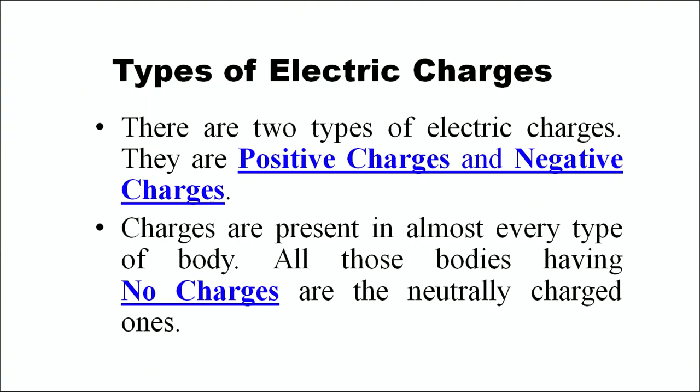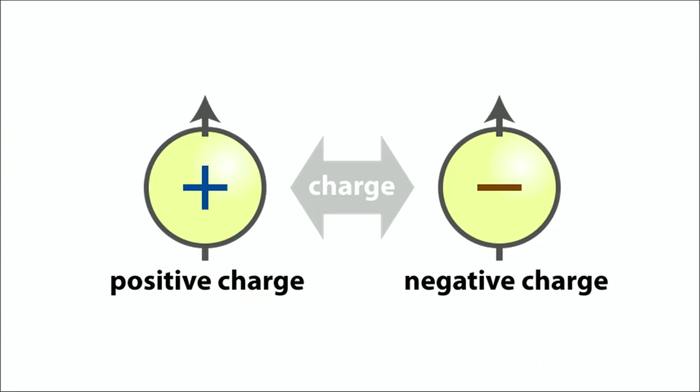Electric charge is of two types: positive charge and negative charge. Charge is present in every type of body. All these bodies have no net charge because they are neutrally charged — neutrally charged means they have equal amounts of positive and negative charge in the neutral state. Symbolically, positive charge is represented by a plus sign and negative charge is represented with a negative sign.